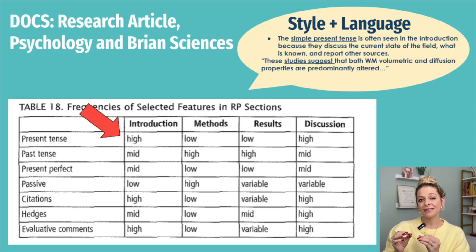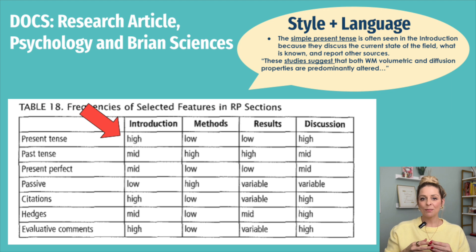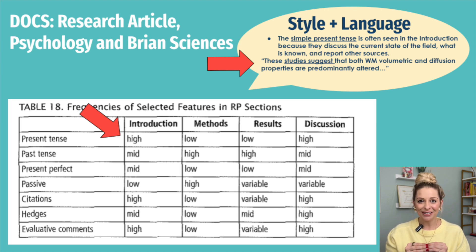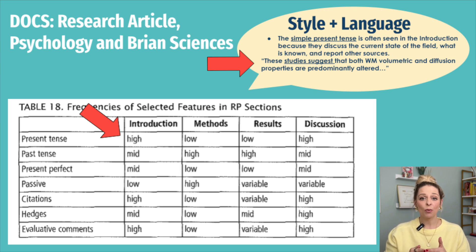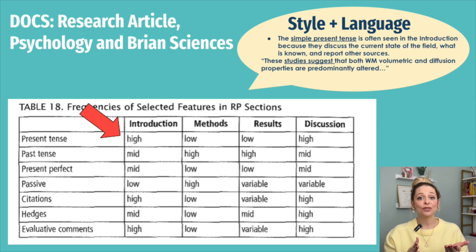These authors analyzed research papers and documented specific language features and how often they occurred in each section. For example, they noticed that the simple present tense is often used in introductions because introductions discuss the current state of the field and report other sources. One example from our psychology and brain studies paper says: 'these studies suggest that both WM volumetric and diffusion properties are predominantly altered' — using simple present to report current studies.